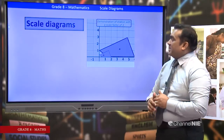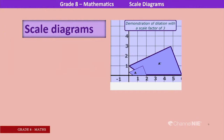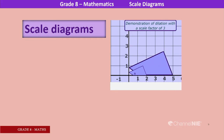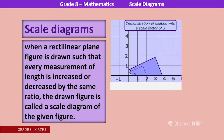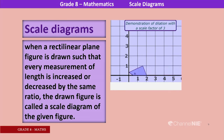These are the advantages of drawing scale diagrams — both increasing and decreasing actual measurements. When a rectilinear plane figure is drawn such that every measurement of length is increased or decreased by the same ratio, the drawn figure is called a scale diagram of the given figure. Here is a demonstration with a scale factor of 3 — three times the original plane figure.